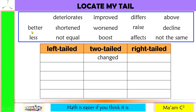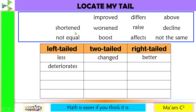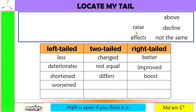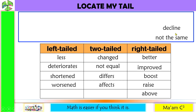Better is right-tailed. Less is left-tailed. Deteriorates is also left-tailed, as well as shortened. Not equal is two-tailed. Improved is right-tailed. Worsened is left-tailed. Boost is right-tailed. Differs is two-tailed. Raise or increase is right-tailed. Affects is two-tailed — you do not know if it is positively or negatively. Above is right-tailed. Declined is left-tailed. And not the same is two-tailed.